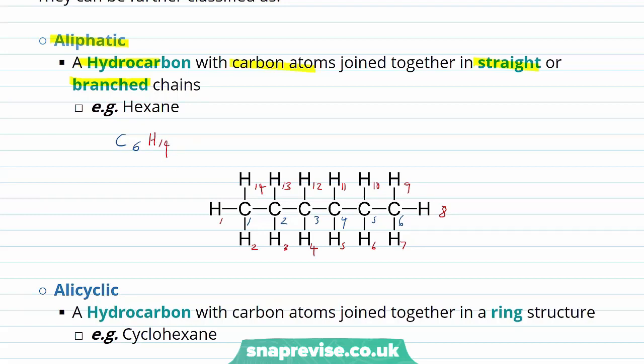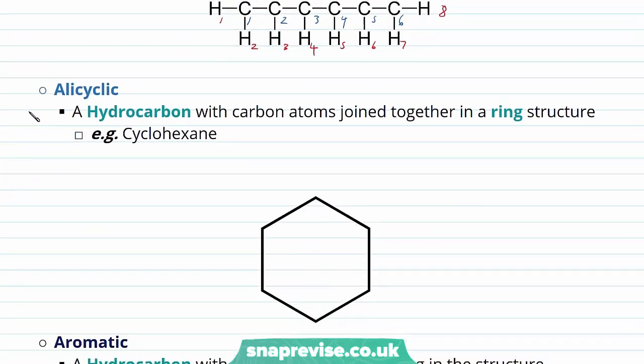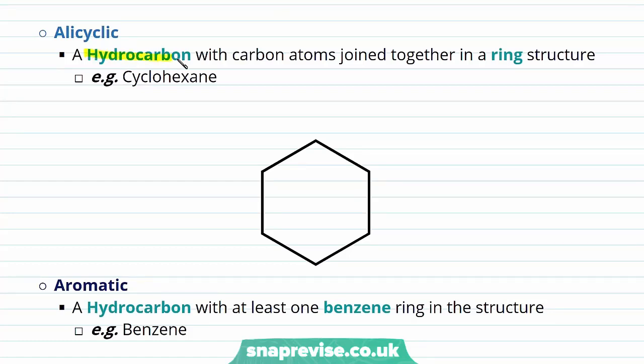Moving to our alicyclic hydrocarbons. These are hydrocarbons with carbon atoms joined together in a ring structure. Here we have an example which is cyclohexane, and you can see that ring structure. Here we have the skeletal formula of cyclohexane — something we'll take a look at in a later video.